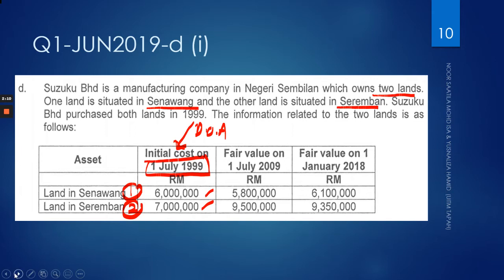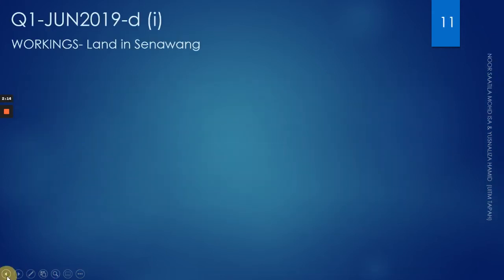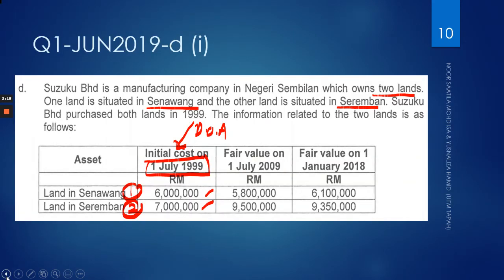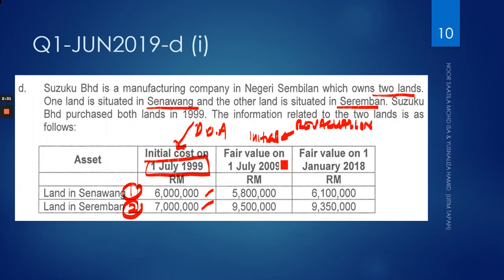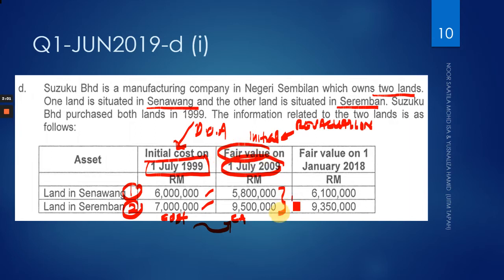Looking at the next part of the question, it is using the revaluation model. The first revaluation is what we call the initial revaluation, which is on 1st of July 2009. Land is not a depreciable asset, so the carrying amount here is at cost. That carrying amount is compared with the fair value — 6 million and 7 million respectively.